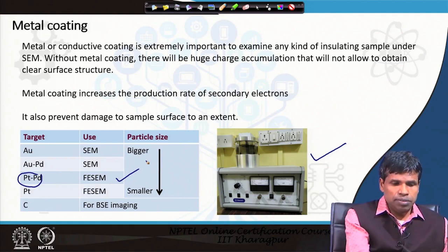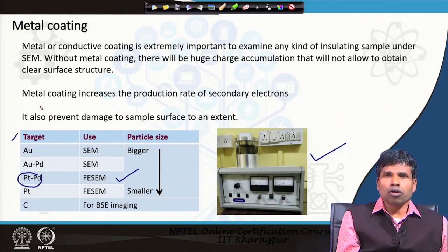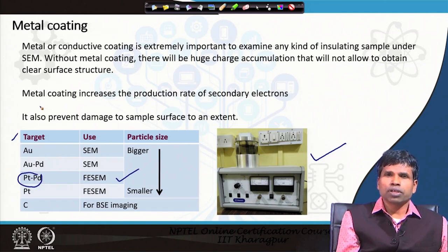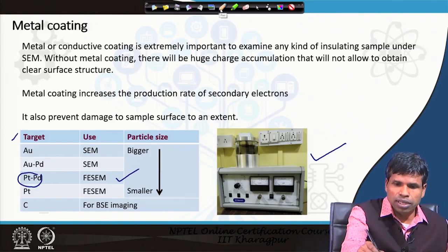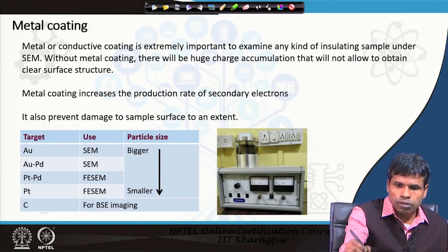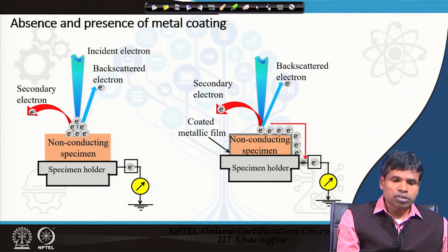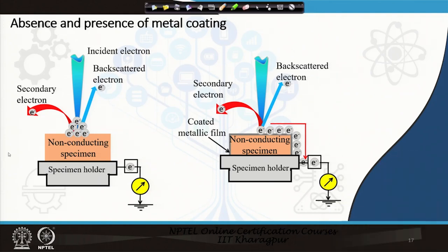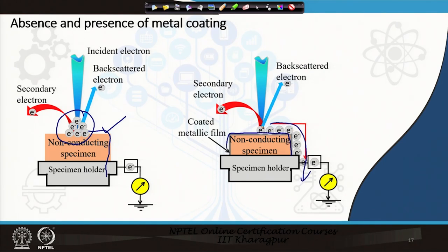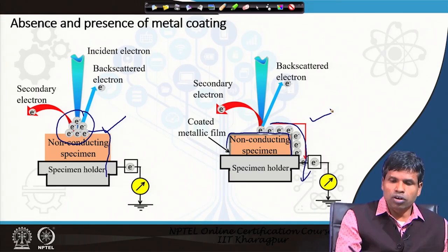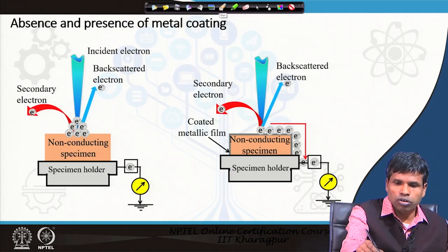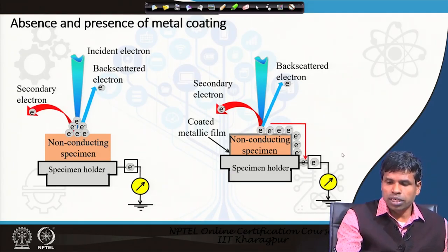In the absence of metal coating, electrons accumulate on the non-conducting sample surface because they cannot pass to ground. With a metal coating provided, electrons are not accumulated at the sample surface, giving us a clear surface image. Metal coating is very important for all non-conducting samples; without it we cannot see a clear surface image.